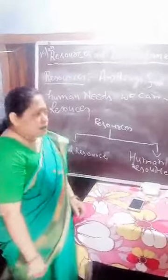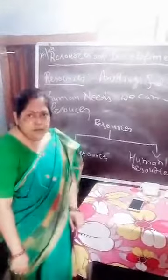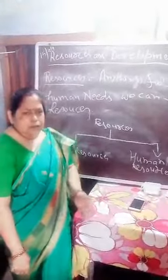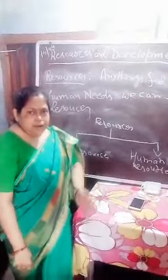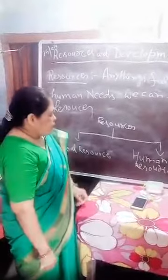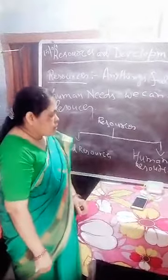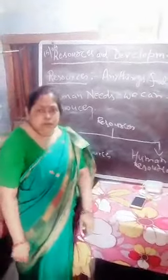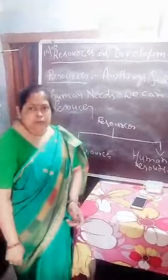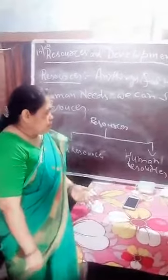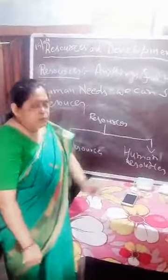We can say natural resources like air, water, soil, sunlight, etc. And human resources — those resources made by man or human — are called human resources.